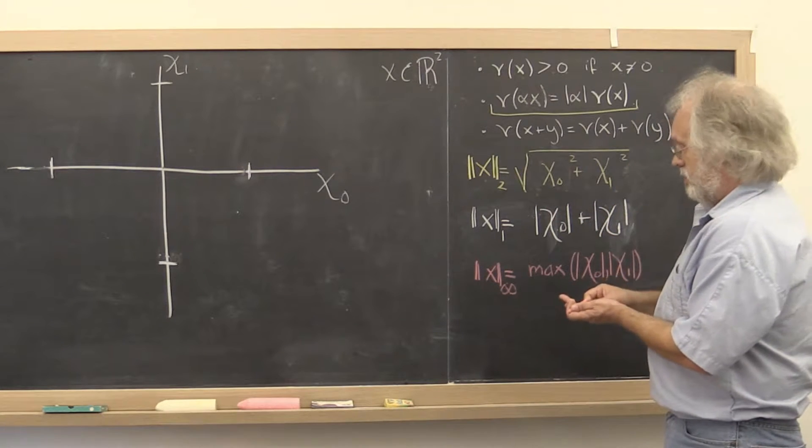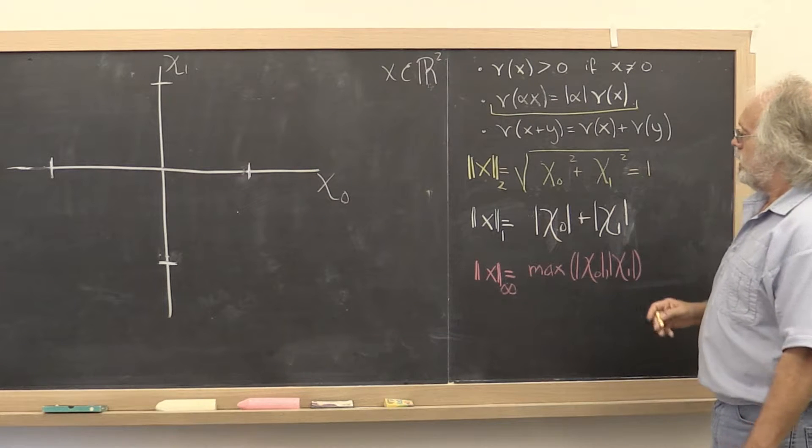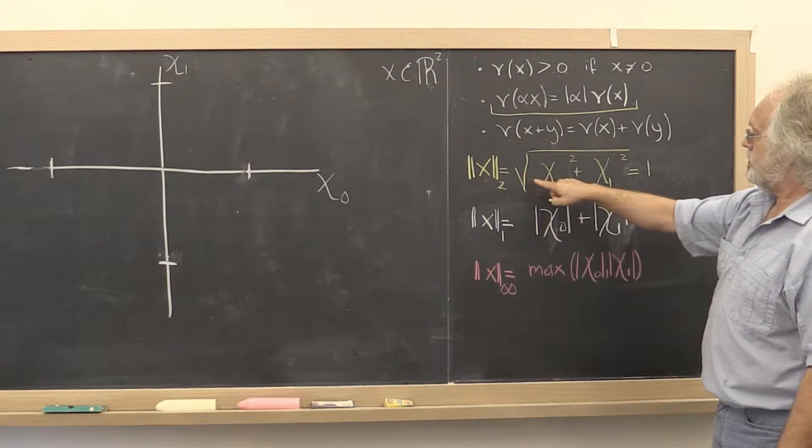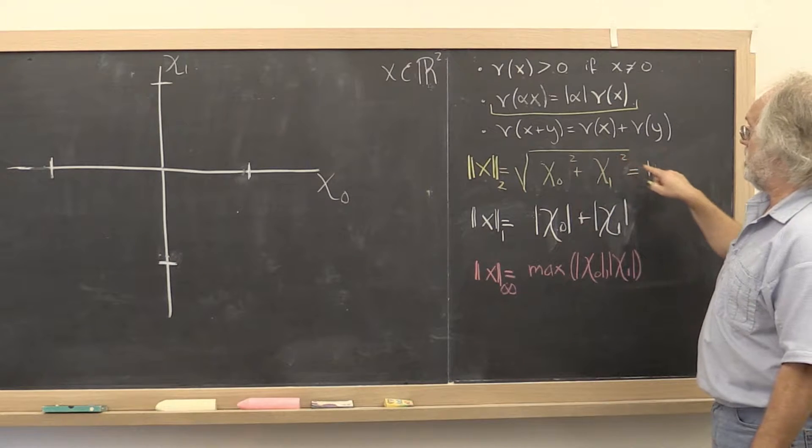So the set where the 2-norm is equal to 1 is of course equivalent to the set where chi0 squared plus chi1 squared is equal to 1.